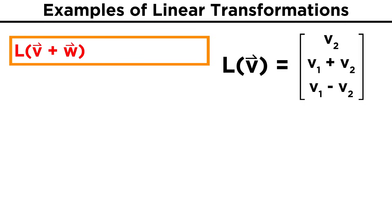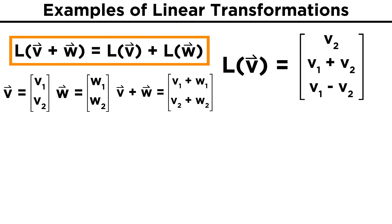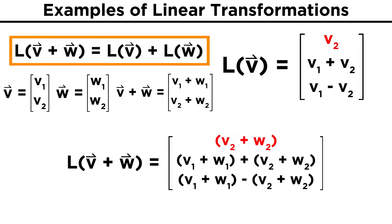Next we must check that the transformation of the sum of two vectors V and W can be written as the sum of the transformation of each individual vector. Letting V = (V1, V2) and W = (W1, W2), then the sum is simply V + W = (V1+W1, V2+W2). When we stick this new vector into our transformation, we obtain (V2+W2, V1+W1+V2+W2, V1+W1−(V2+W2)).